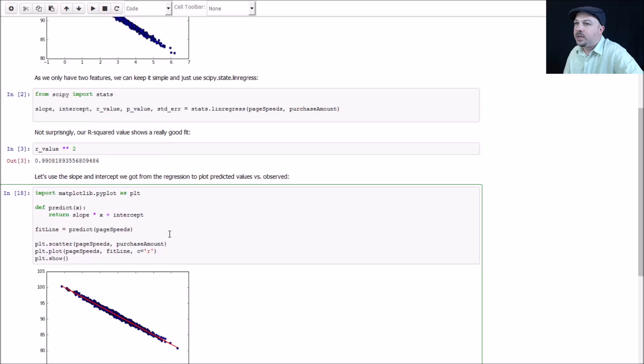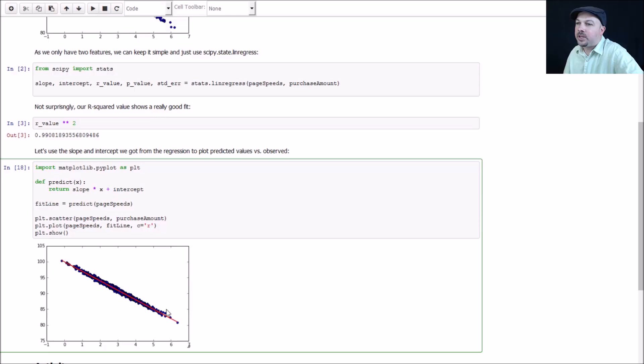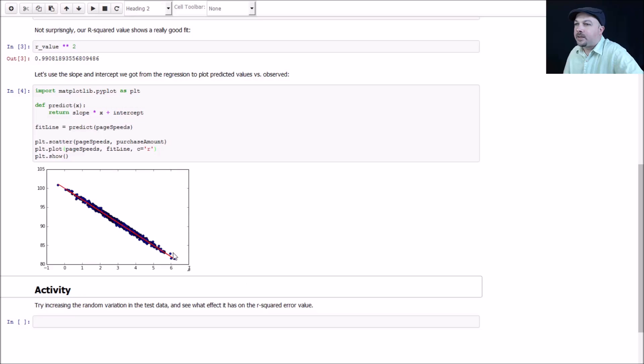Let's actually plot that line. This bit of code will create a function to draw that red best fit line alongside the data. We're going to make a fit line list using this predict function to take the page speeds, which is our x-axis, and create the Y function from that. Instead of taking the observations for amounts spent, we're going to find the predicted ones using the slope times X plus the intercept that we got back from the linregress call. We'll do a scatter plot to show the raw data points, the observations, and then call plot using our fit line to show them both together. You can see that our line is in fact a great fit for our data. It goes right smack down the middle.